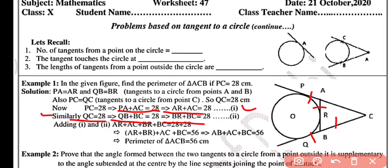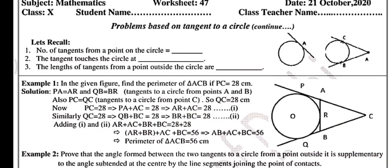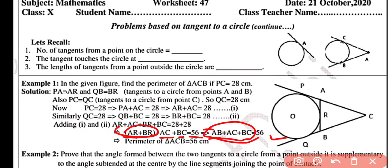QB equals BR, so BR plus BC equals 28 centimeters — equation two. Adding equations one and two: AR + AC + BR + BC = 56. AR + BR equals AB, so AB + AC + BC = 56. These are the three sides of triangle ABC, so the perimeter of triangle ABC equals 56 centimeters.